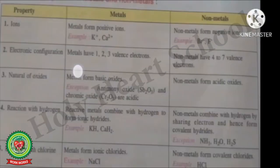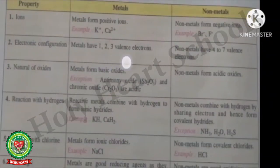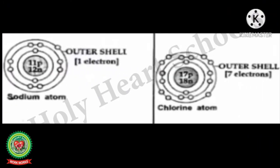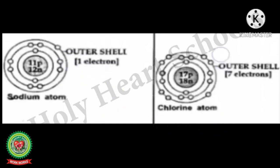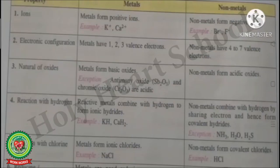The next chemical property is electronic configuration. Metals have 1, 2, or 3 valence electrons, while non-metals have 4 to 7 valence electrons. For example, a sodium atom has only 1 electron in its outermost shell. On the other hand, a chlorine atom has 7 electrons in its outermost shell.